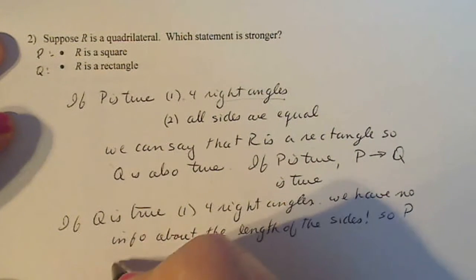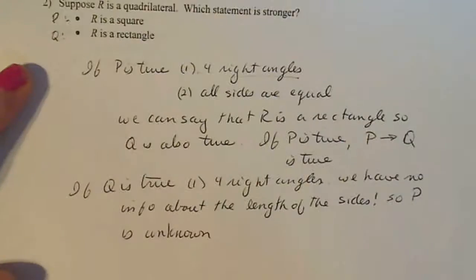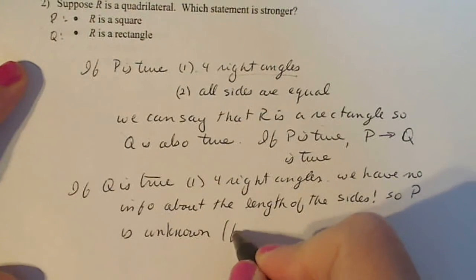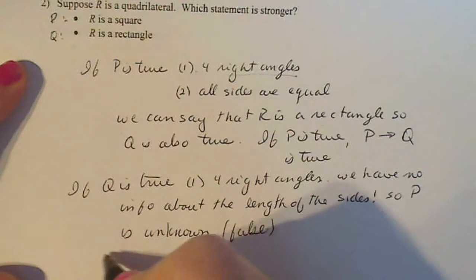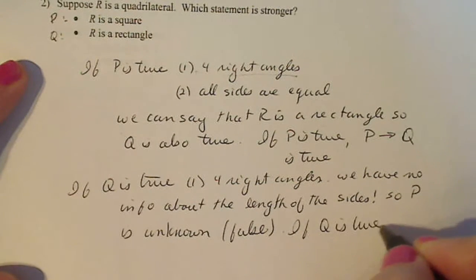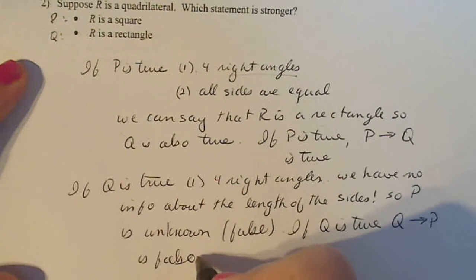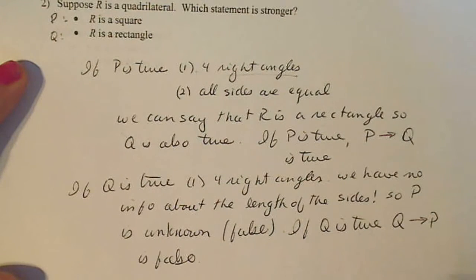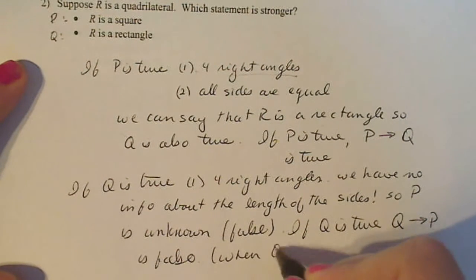So P is unknown to be true or false. So if it's unknown, then we just say it's false. So if Q is true, Q being a rectangle, implying a square is false. When Q is true, I guess I'm repeating myself here.